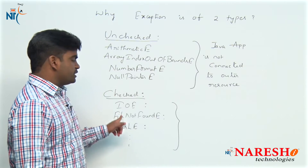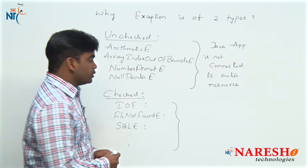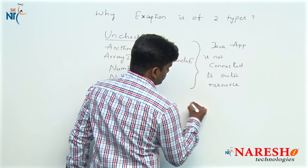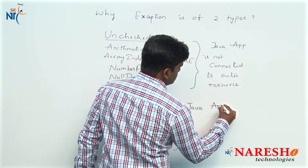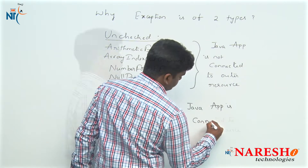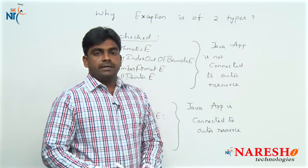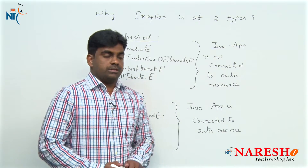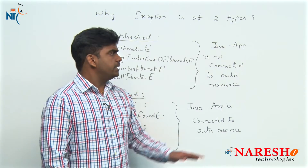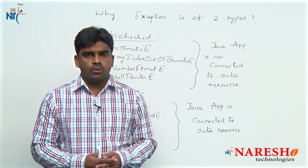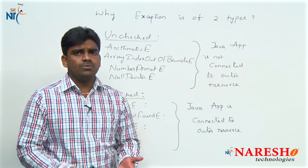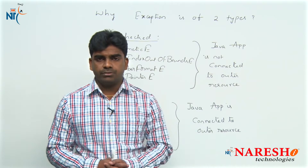In the case of IOException, you are working with input/output devices like a printer or scanner. FileNotFoundException means your Java application is connected to an outside file — image files, audio files, video files, text files. SQLException means your application is connected to a database — SQL Server, MySQL, Oracle. In case of checked exception, your Java application is connected to an outside resource.